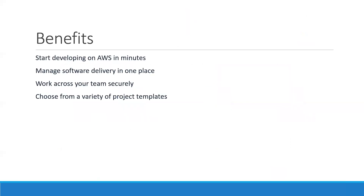Now, what are the benefits? It helps you start developing on AWS within minutes, manage software delivery in one place, and work across a team securely. We can also choose from different templates rather than developing from scratch. There are lots of templates supporting most languages — C#, Java, HTML, and more. So don't worry about template availability — there are lots of things to check in the interface. Let's move on to the AWS console.